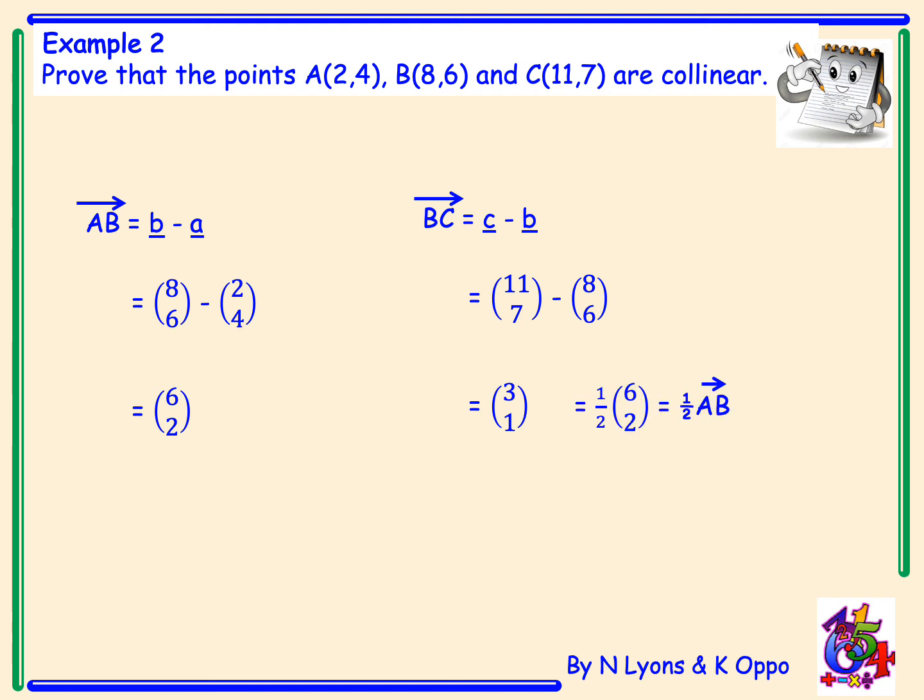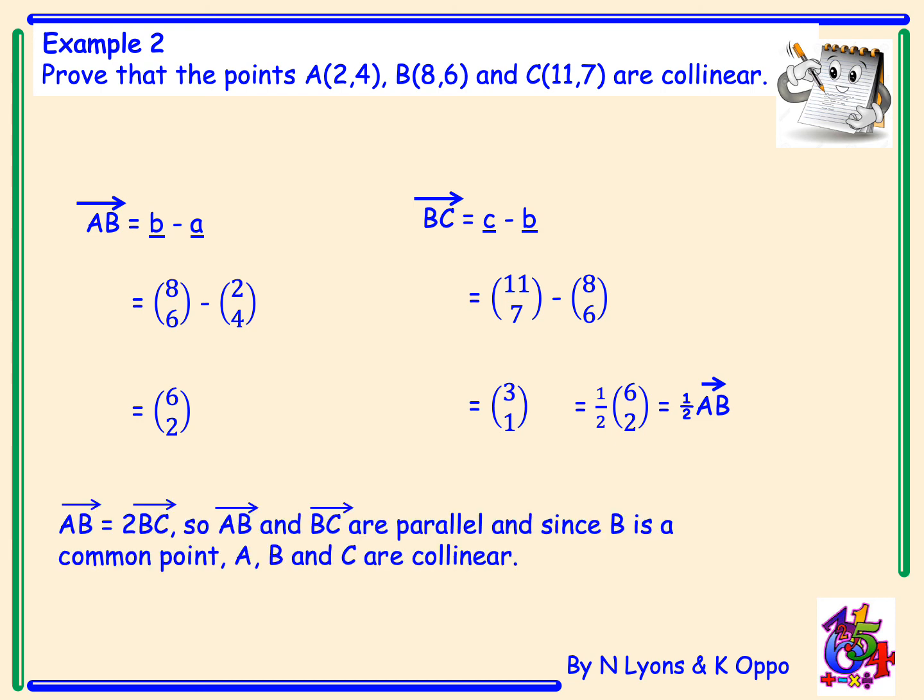This time, we can see that (3, 1) is half of (6, 2), which means it is half of vector AB. Therefore, AB is equal to two lots of vector BC.